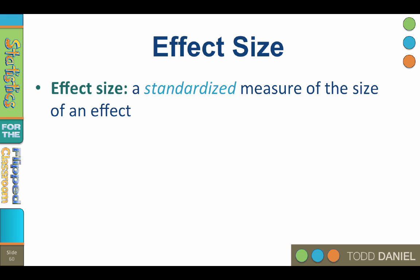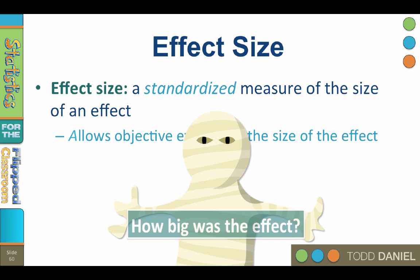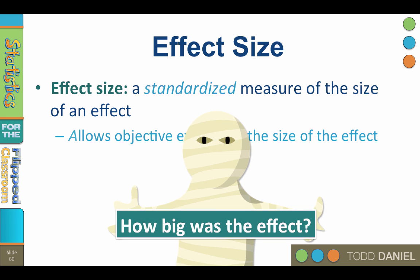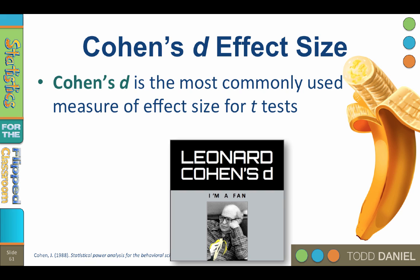An effect size is a standardized measure of the size of an effect. It measures how large the effect was, allowing for the objective evaluation of the size of the effect. Effect size helps us answer the question of whether a treatment had any practical usefulness — how big was the effect? Cohen's d is the most commonly used measure of effect size for t-tests.